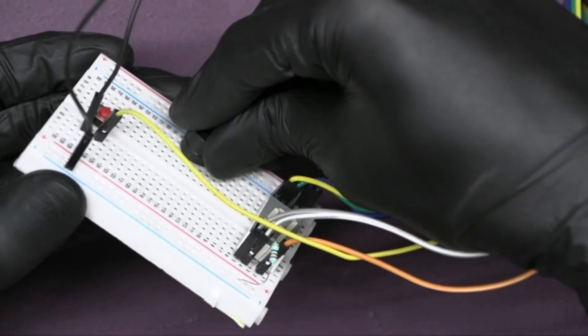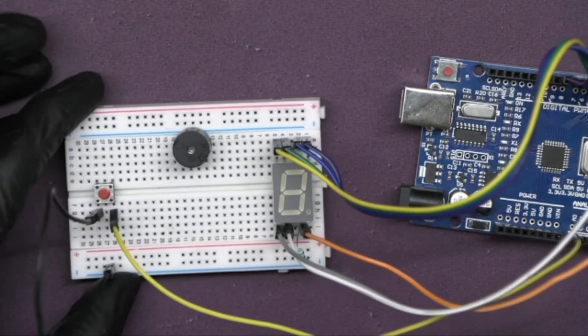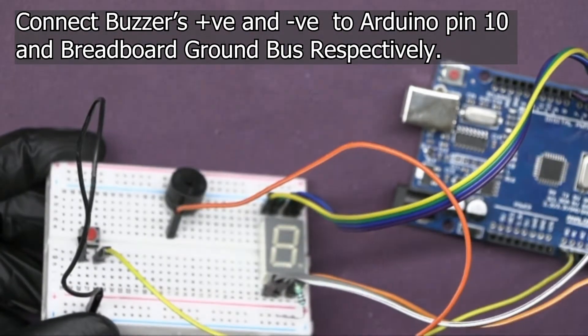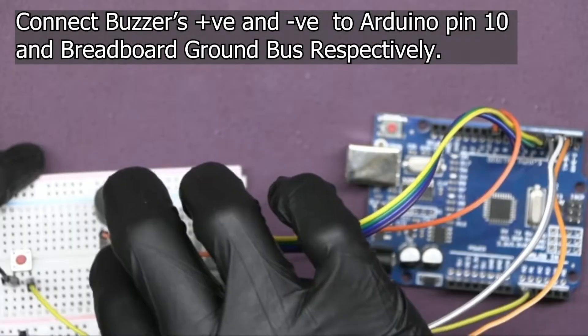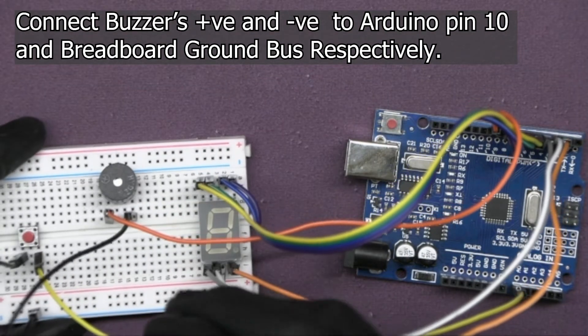Insert buzzer in the breadboard in this way. Connect the positive leg of the buzzer to digital pin 10 and the negative leg to the ground bus on the breadboard.